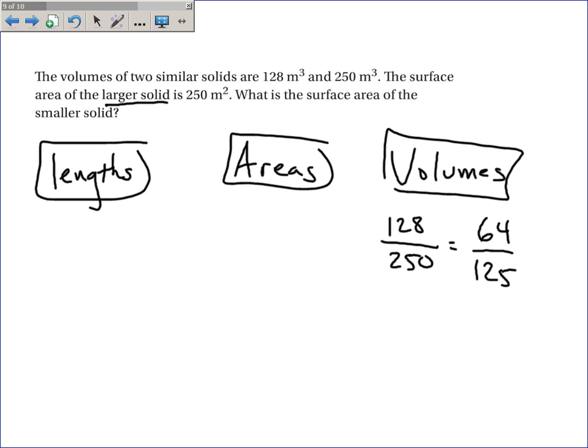Now, I need to know the ratio of the area since I'm given an area. But I can't go directly from volumes to areas, at least not very easily. So, I'll go from volumes to lengths by taking cube roots. So, the cube root of 64 is 4, and the cube root of 125 is 5. Now, once I have the ratio of the lengths, I can then square them and get the ratio of the areas, 16 over 25.